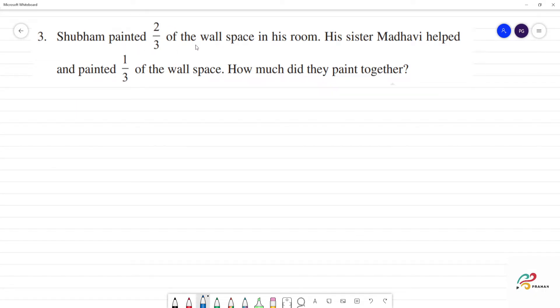Shubham painted 2 by 3 of the wall space in his room. His sister Madhavi helped and painted 1 by 3 of the wall space. How much did they paint together?